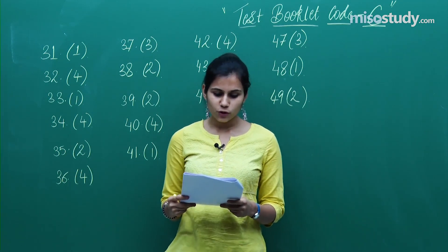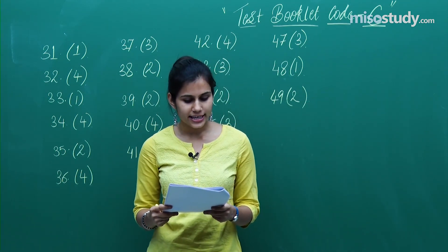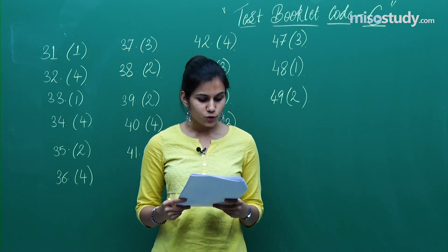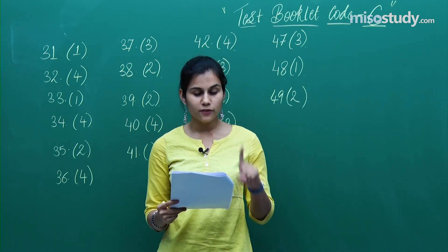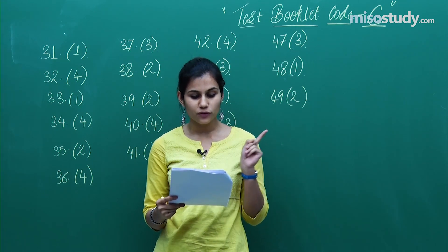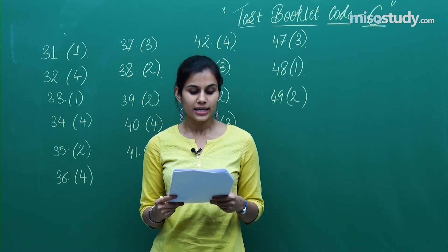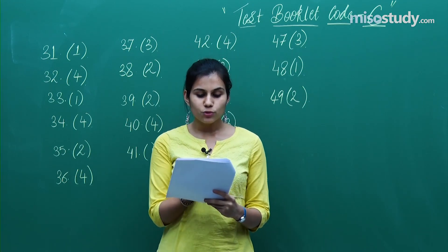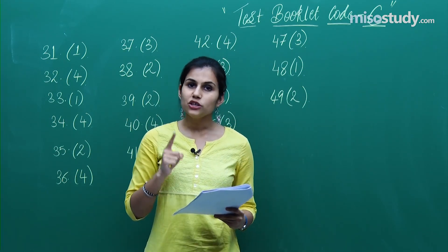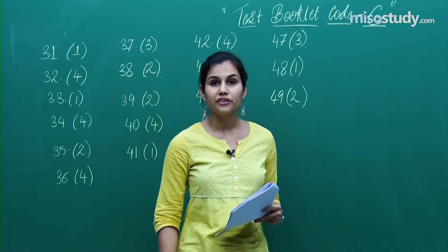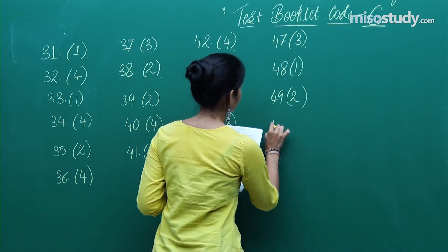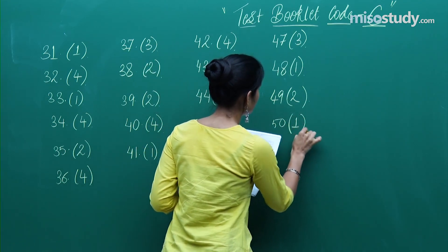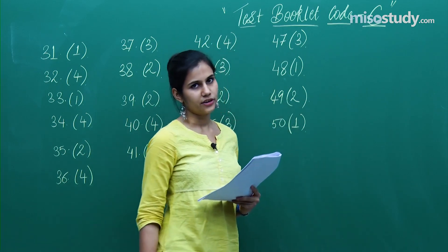Question 50 is from sequences and series, 11th standard. Here 248, which is the first option, comes out as the answer of the given expression asking you to compute the value of lambda. The value of lambda comes out as 248, so question 50 holds the first option as the correct one.